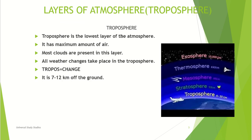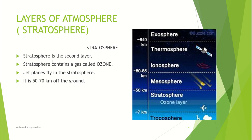The troposphere is the lowest layer of the atmosphere. It has the maximum amount of air, most clouds are present in this layer, and all weather changes take place in the troposphere. 'Tropos' means change. It is 7 to 12 kilometers off the ground, as you can see here.